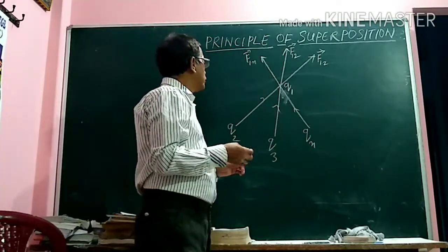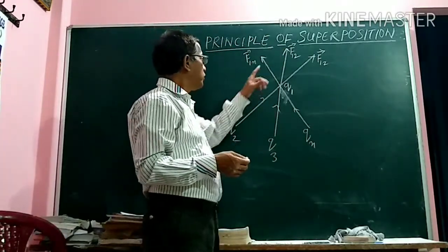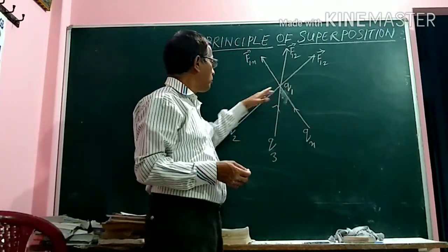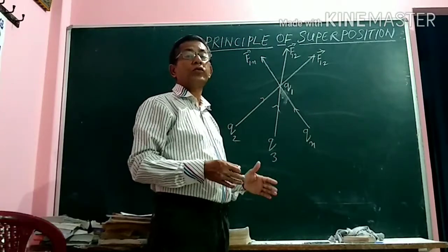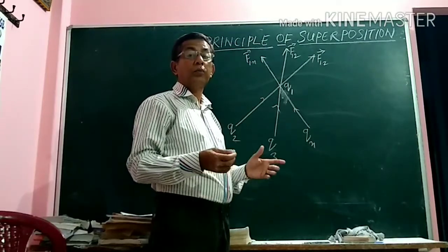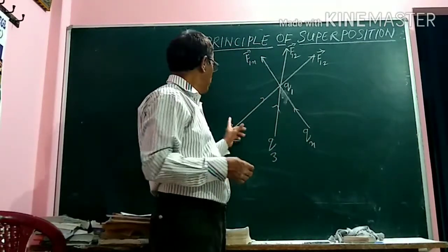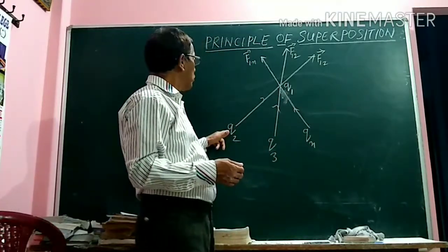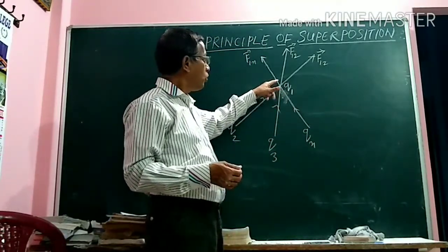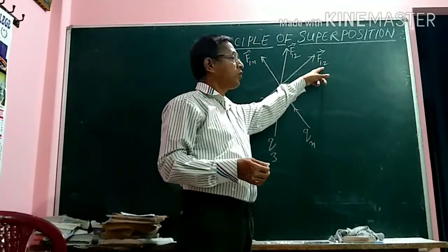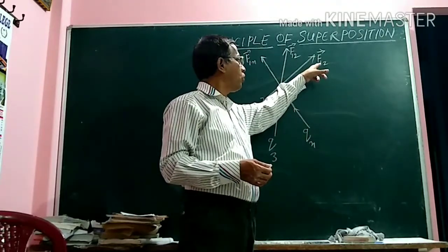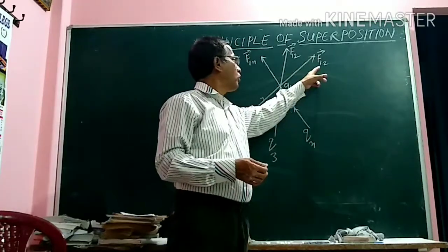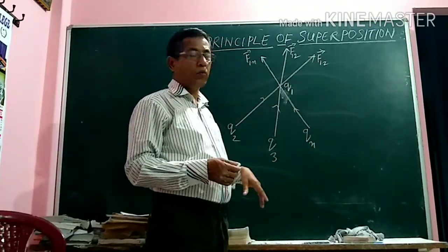Now, suppose F12: since both charges are positive, there is repulsion — similar types of charges repel each other. So Q2 will repel Q1 with a force F12, meaning the force applied on charge Q1 due to Q2 is F12.